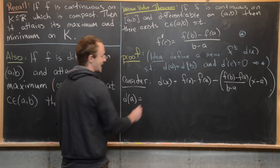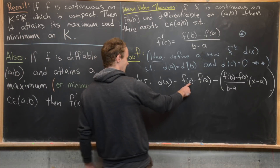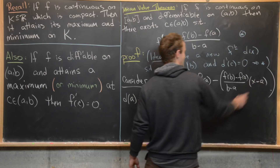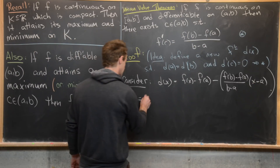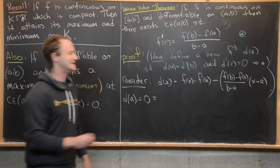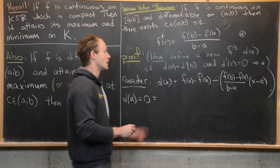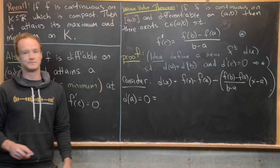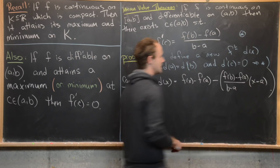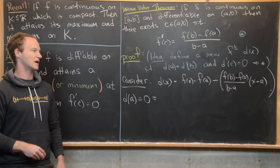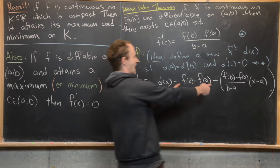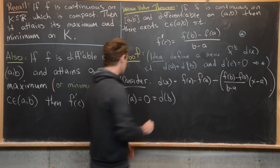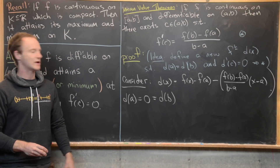This function d of x satisfies everything we need. If we take d of a, we get F of a minus F of a, plus a minus a times the slope term, giving zero. If we take d of b, we get F of b minus F of a from the first part, and then b minus a cancels the denominator in the second part, giving F of b minus F of a minus (F of b minus F of a), which is zero. So d of a equals zero equals d of b.